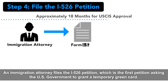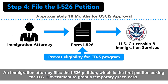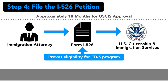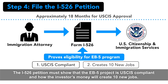An immigration attorney files the I-526 petition, which is the first petition asking the U.S. government to grant a temporary green card. The I-526 petition must show that the EB-5 project is USCIS compliant and how the investor's money will create 10 new jobs.